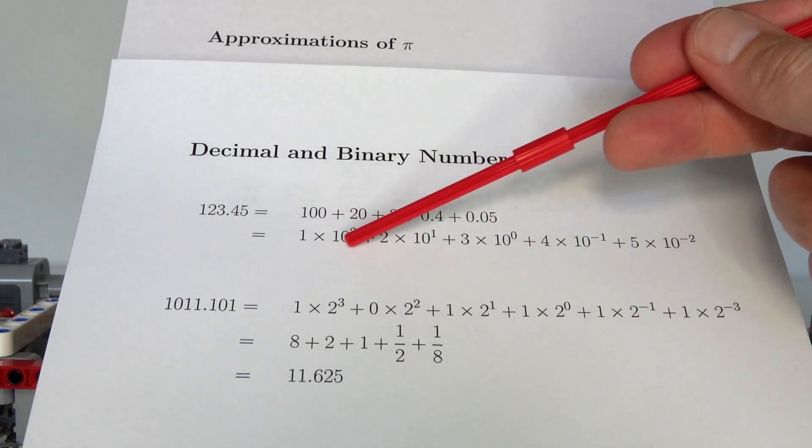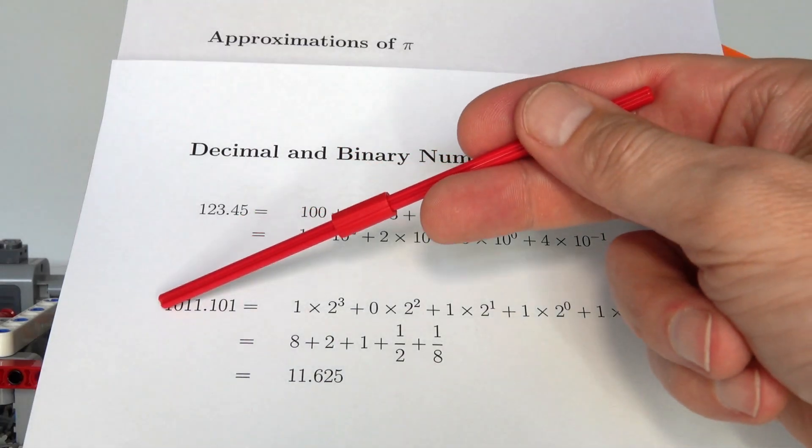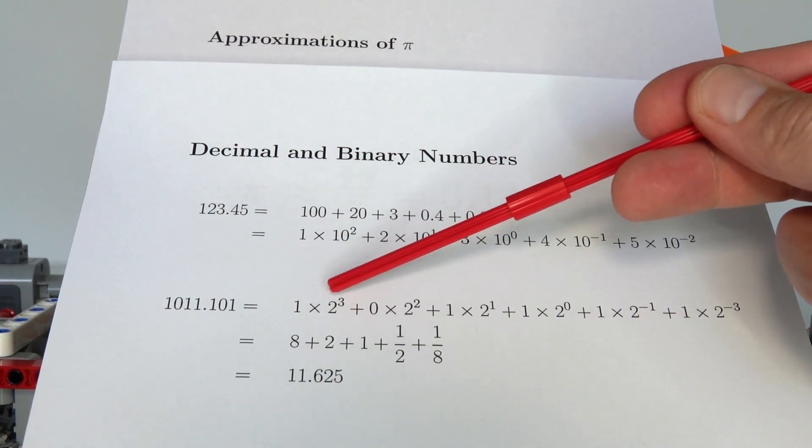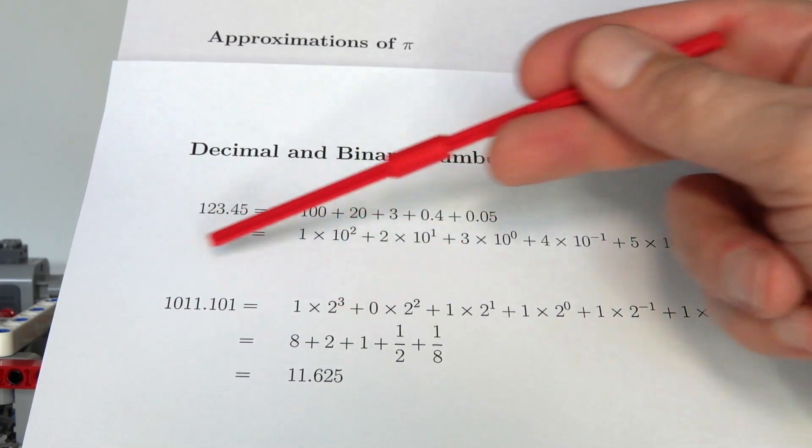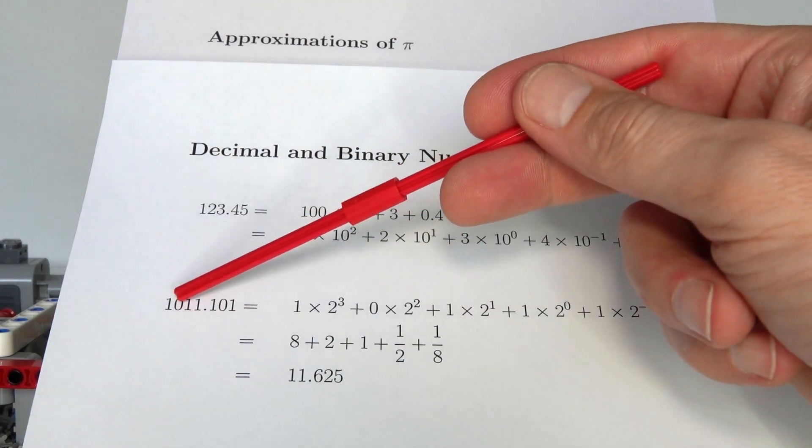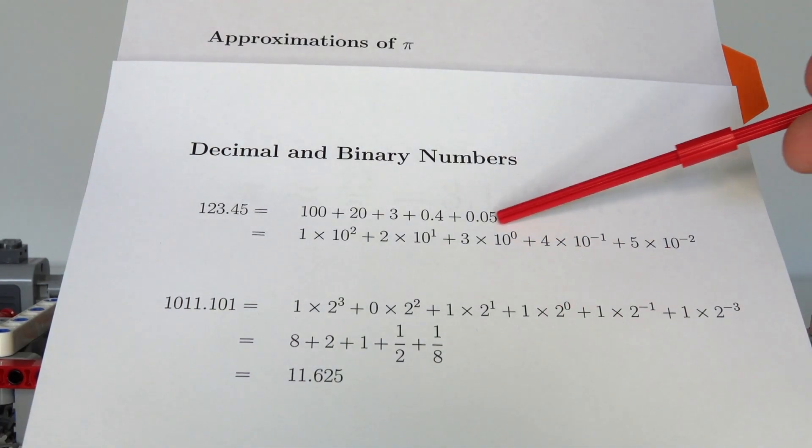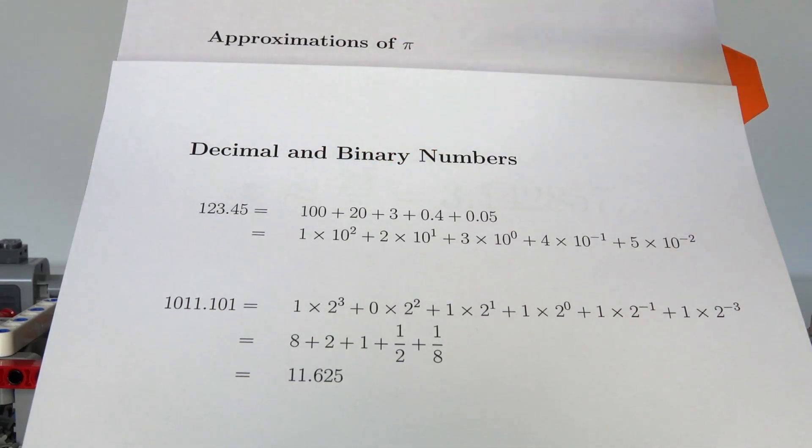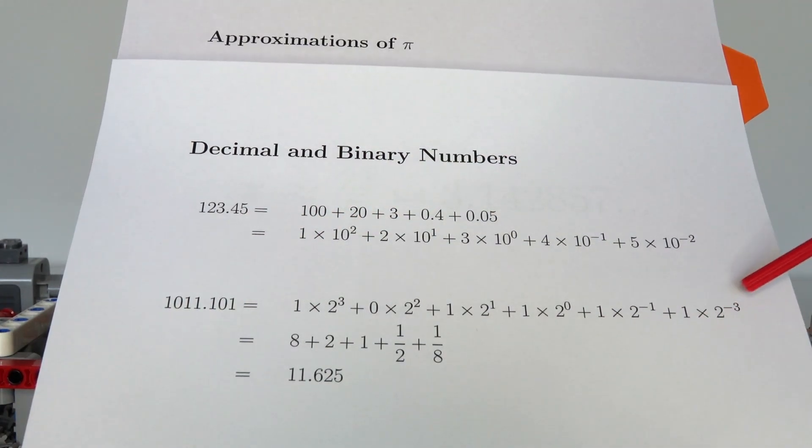We can do the same with a binary number. Instead of using base 10, we're using base 2 and just digits 0 and 1 for each of the multipliers. For example, if we've got a binary number like 1011.101, that means we've got one lot of 2 to the power of 3, zero lots of 2 to the power of 2, one lot of 2 to the power of 1, one lot of 2 to the power of 0. After the decimal point, rather than using tenths and hundredths, we're using halves, quarters, eighths, sixteenths. In this case, we have one half and one eighth.